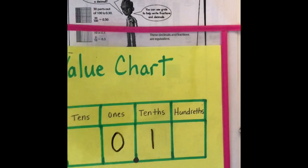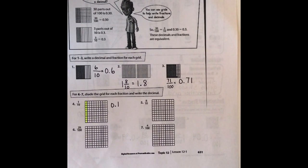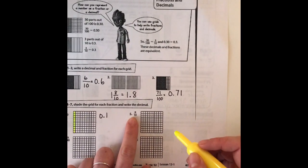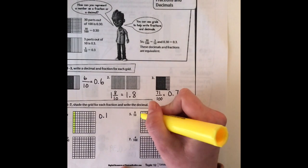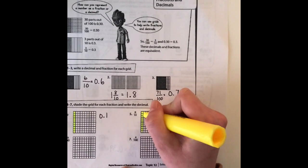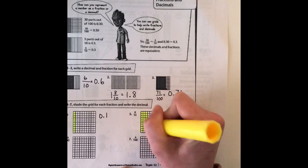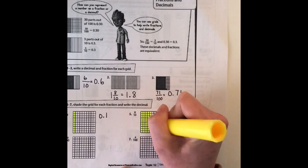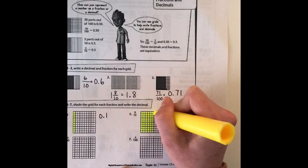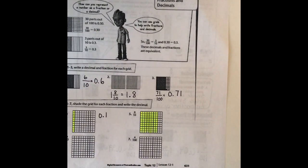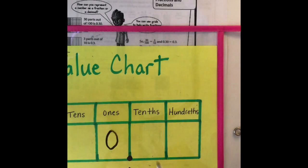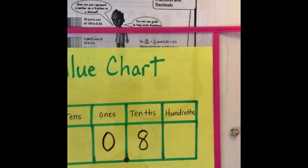Moving on to number five, we have to fill in eight tenths. Since each row represents one tenth, we need eight of them: 1, 2, 3, 4, 5, 6, 7, 8. Now I have eight tenths filled in. On the place value chart I have 8 in my tenths, so I write 0.8 as my decimal answer.